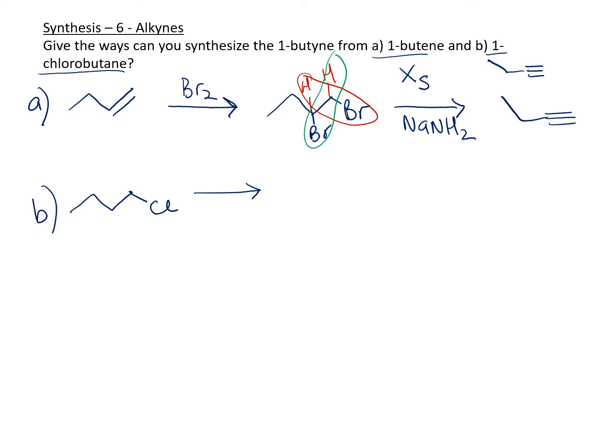In this case, we have a leaving group, but not two leaving groups. If you have one leaving group, you can only do one elimination, which means if I remove this one, I need to do something else. You first have to do some sort of elimination. The elimination you need to do is with a strong base. Let's use NaNH2.